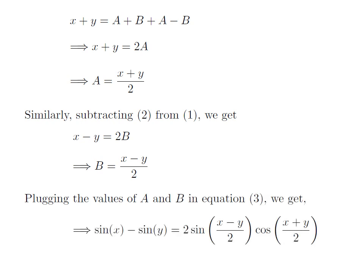Let's plug the newly found values of A and B into equation 3. We get sin of x minus sin of y is equal to 2 times sin of x minus y divided by 2 into cosine of x plus y divided by 2. So, this is the identity for sin of x minus sin of y.